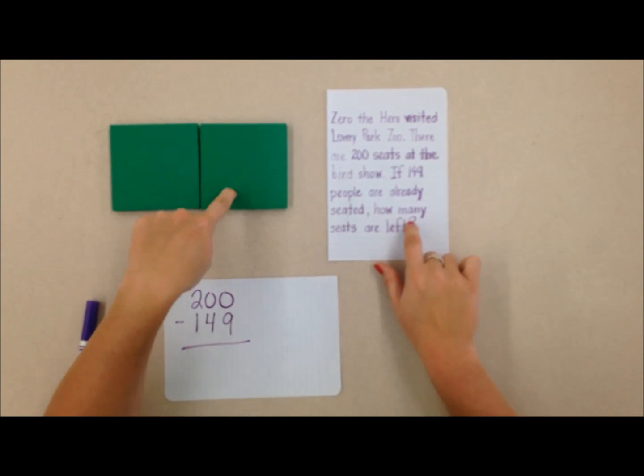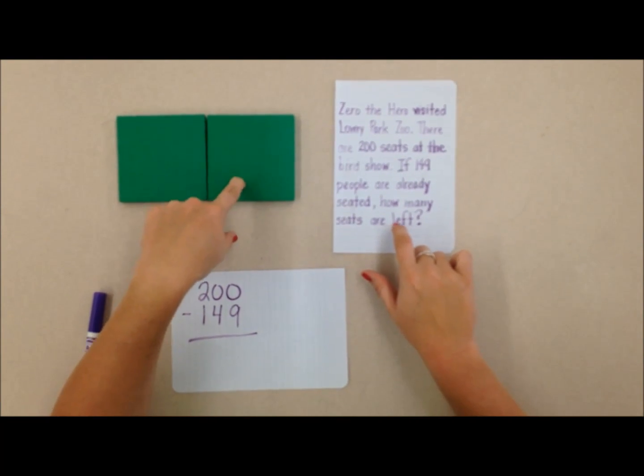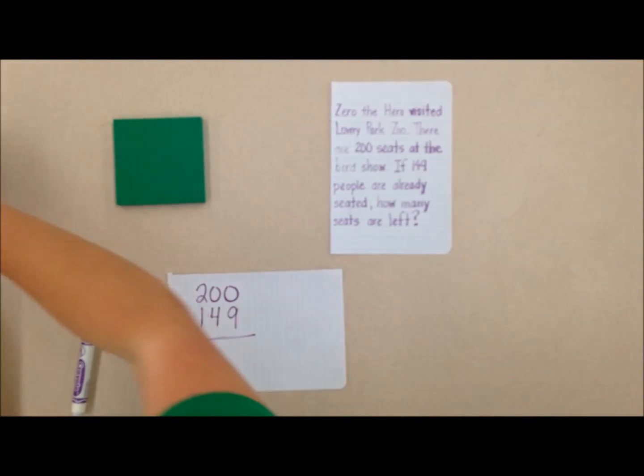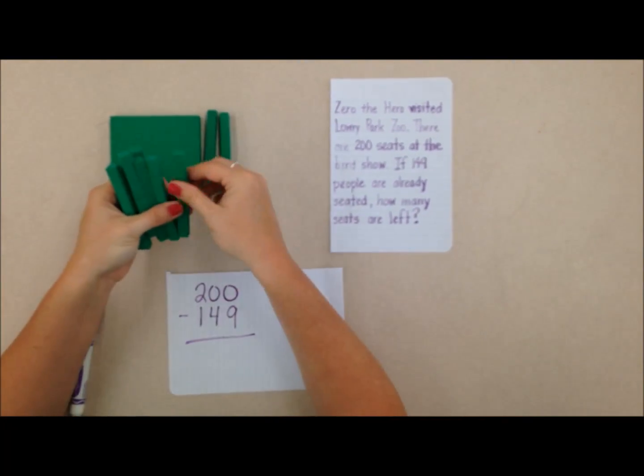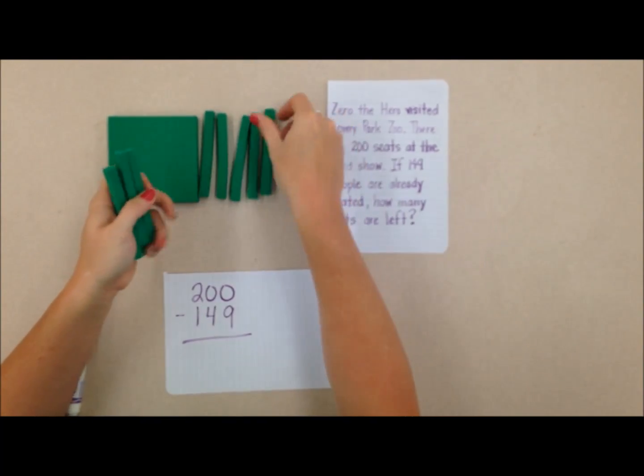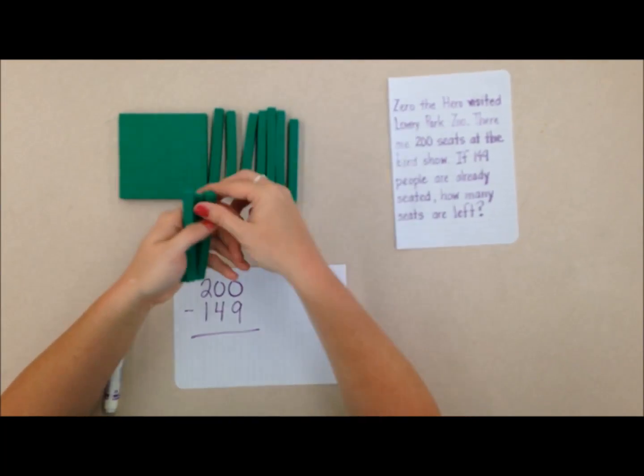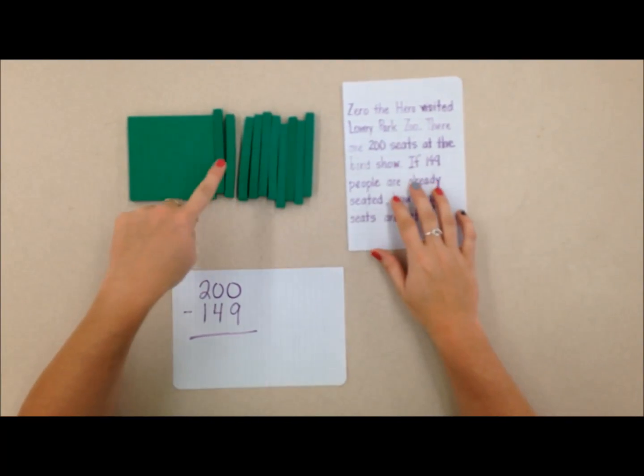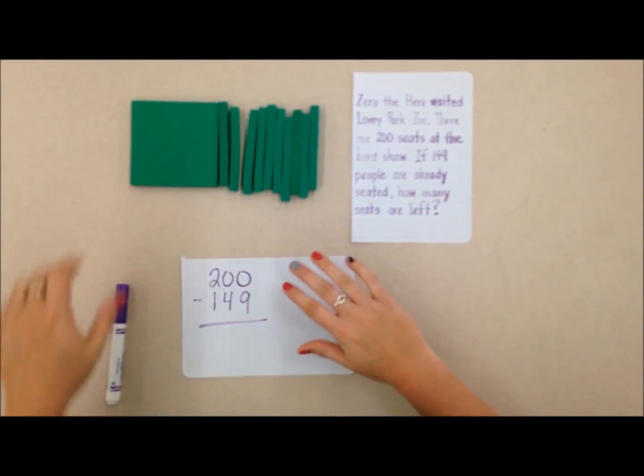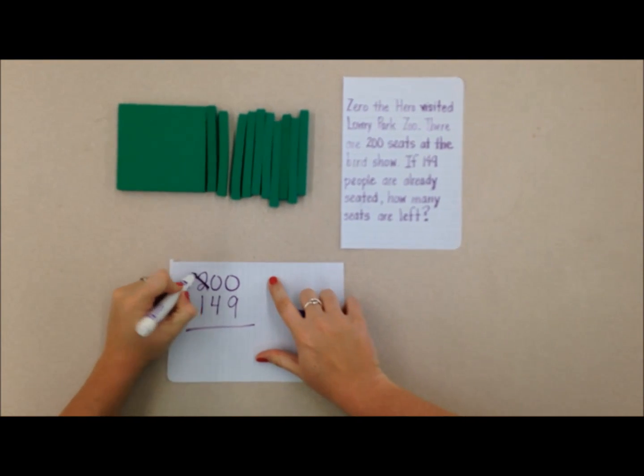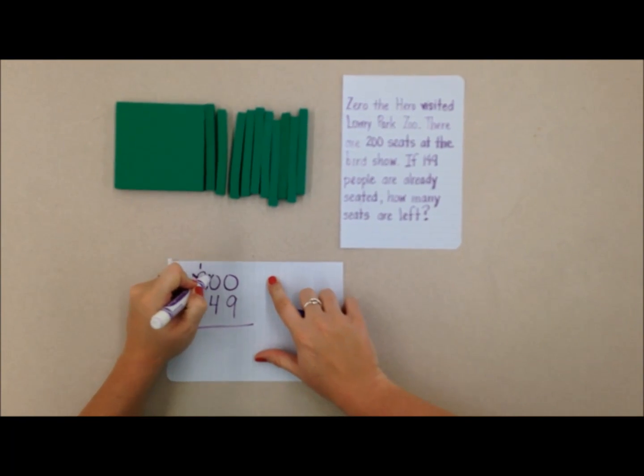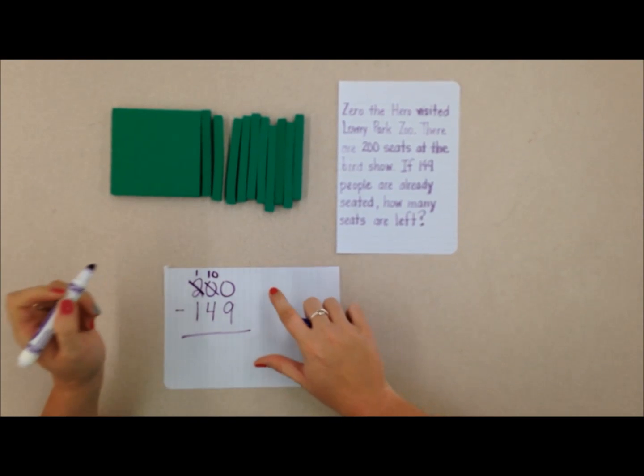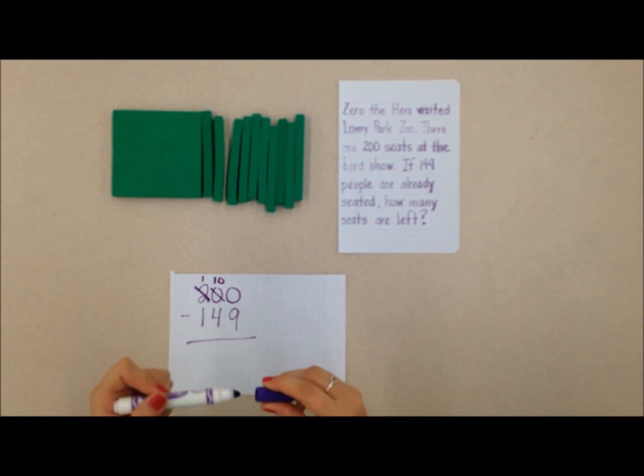And I remember from before that ten tens is the same thing as a hundred. So if I trade this for ten tens, let's see, one, two, three, four, five, six, seven, eight, nine, ten tens. So that's still 200, but it's kind of represented differently. Now I have 100 and now I have ten tens, but I still don't have any ones that I can take away.